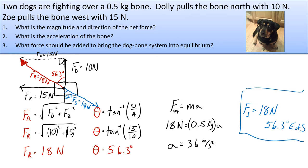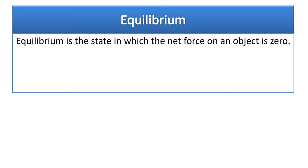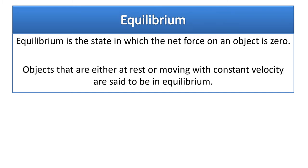That force would bring the two dogs into equilibrium. Equilibrium is the state in which the net force on an object is zero. Objects that are either at rest or moving with constant velocity are said to be in equilibrium. If all the forces balance out and the net force is zero, then F equals MA means the acceleration is zero — so it's either at rest or moving with constant velocity.